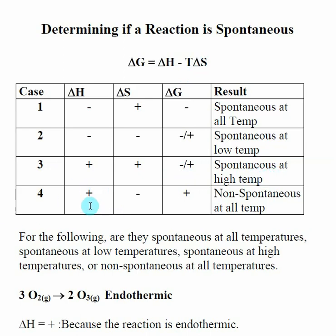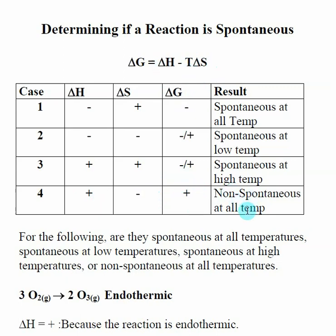In Case 4, both signs are working against a negative delta G: delta H is positive (endothermic) and delta S is negative (things are becoming more ordered). Both pieces of the equation are positive, so regardless of temperature, delta G is going to be positive. This is called non-spontaneous at all temperatures.